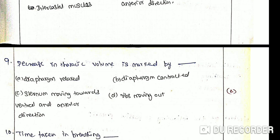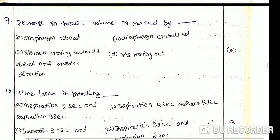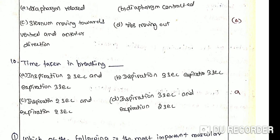Decrease in thoracic volume is marked by: Option A: Diaphragm relaxed. Option B: Diaphragm contracted. Option C: Sternum moves towards ventral and anterior direction. Option D: Ribs moving out. The correct answer is Option A: Diaphragm relaxed. Decrease in thoracic volume, necessary for expiration, is marked by relaxation in diaphragm and external intercostal muscles. Decrease in thoracic volume is necessary in order to build more pressure than atmospheric pressure.